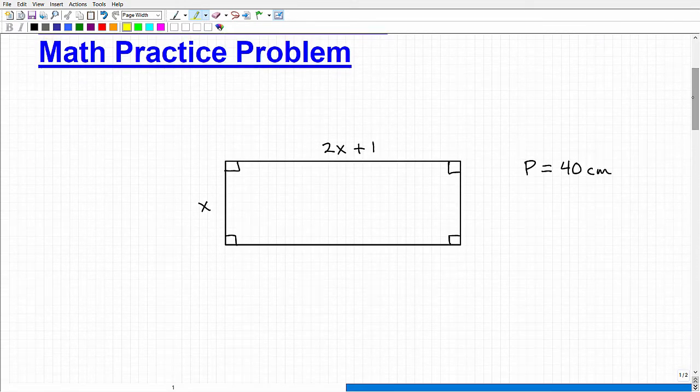Let me tell you what I have. This is a rectangle with some lengths. These are the dimensions of this particular rectangle. We have the length and width, and its perimeter is 40 centimeters. What I'd like you to do is solve for x.